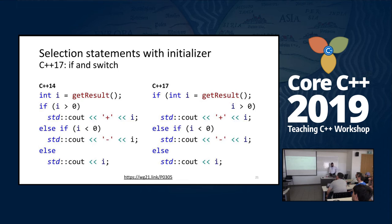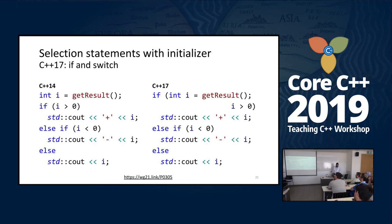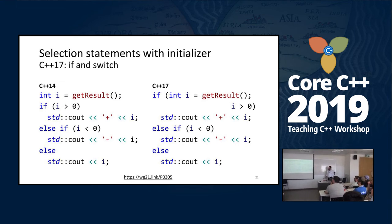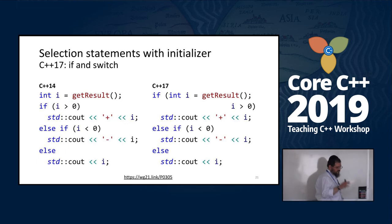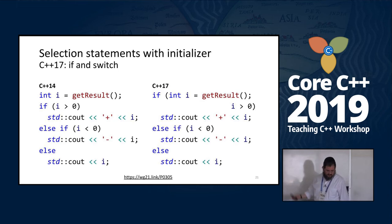Another change is selection statements with initializer. With 'if', for example — but it works for switch too — we had to initialize the variable first before checking the condition, and if we wanted it scoped just to the if, we had to introduce an artificial scope. With C++17, we can write it all in one line.